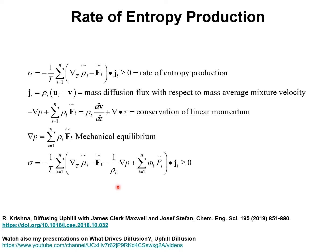For N-component diffusion, the expression for the rate of entropy production sigma is the sum of the product of driving forces and fluxes. Both driving forces and fluxes are written in mass units. Mu sub i with a tilde is the specific chemical potential in units of joules per kilogram of species i. F sub i with a tilde is the body force acting per mass of species i. J sub i is the mass diffusion flux.